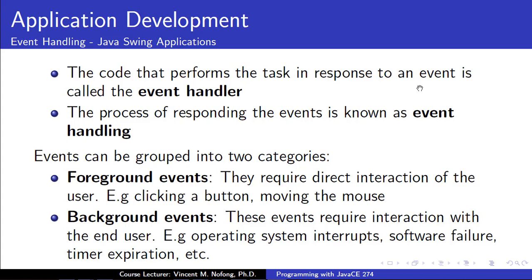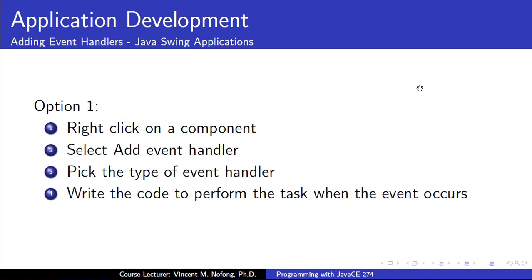So when we are responding to this event, we are using what is referred to as event handling. We know that we can have categories of events. The event can be a foreground event or a background event. By foreground, it means we need direct interaction between the user and the application. There are various ways we can add event handling in Java Swing applications. We can simply right-click on the component, select the type of event handling we want, and write a code to perform the task when the event occurs.